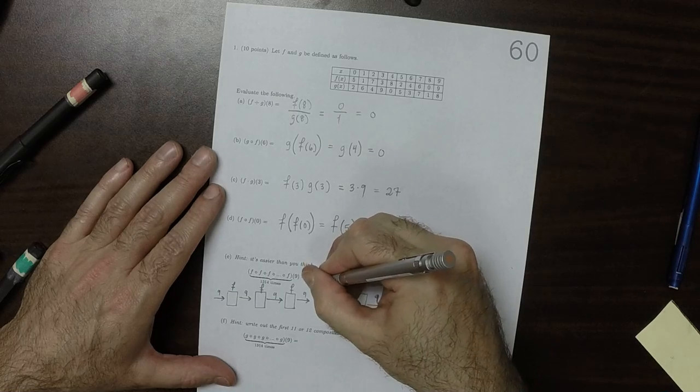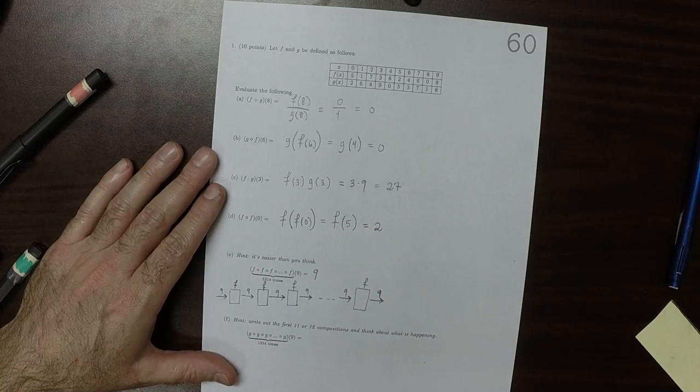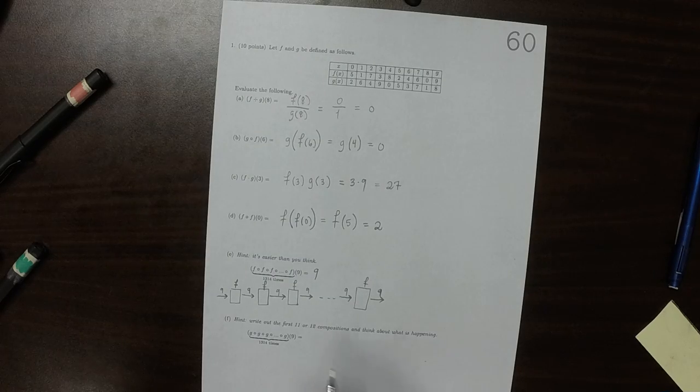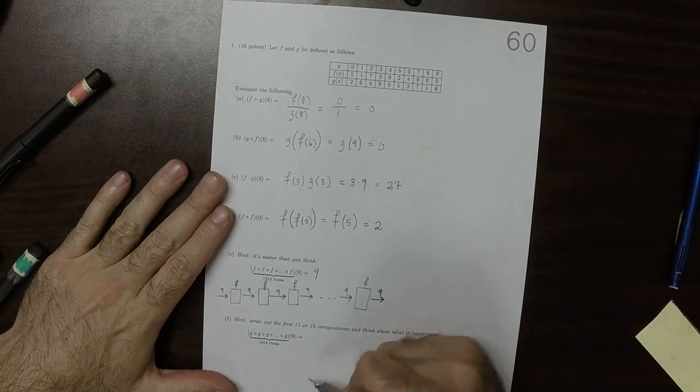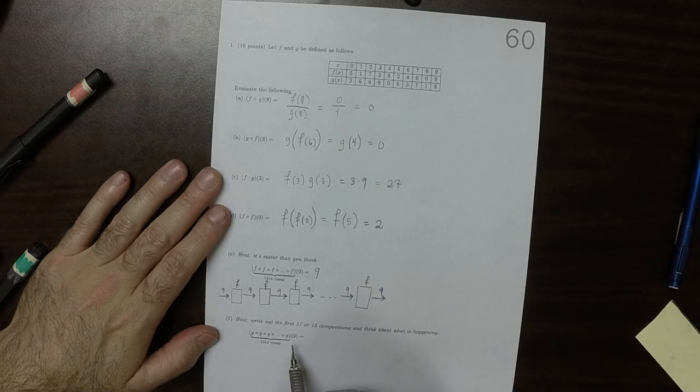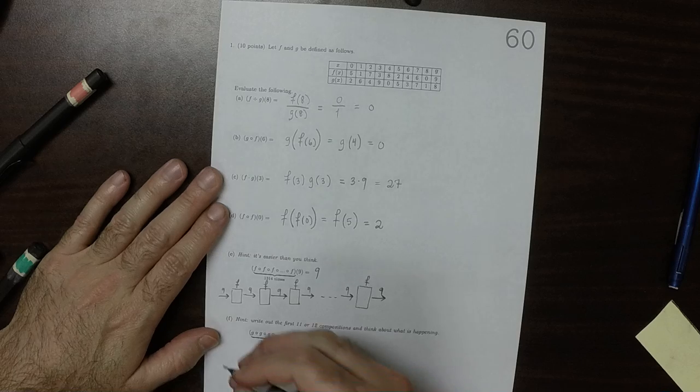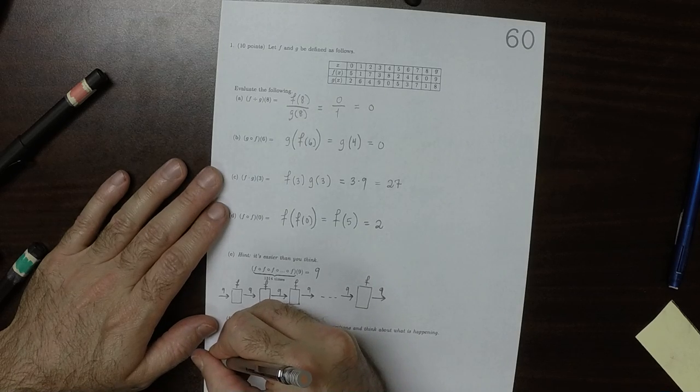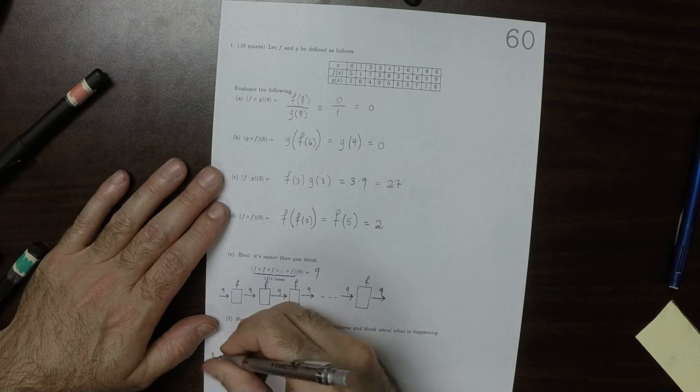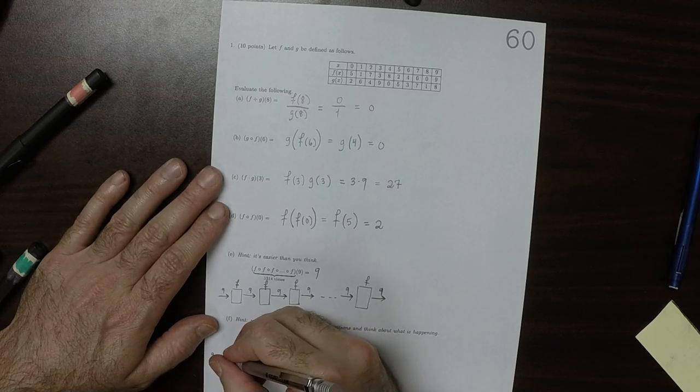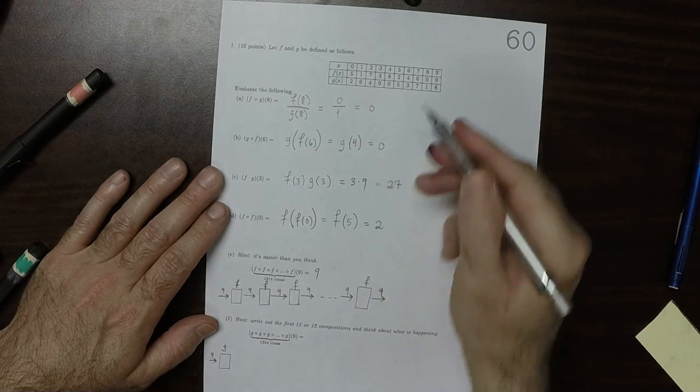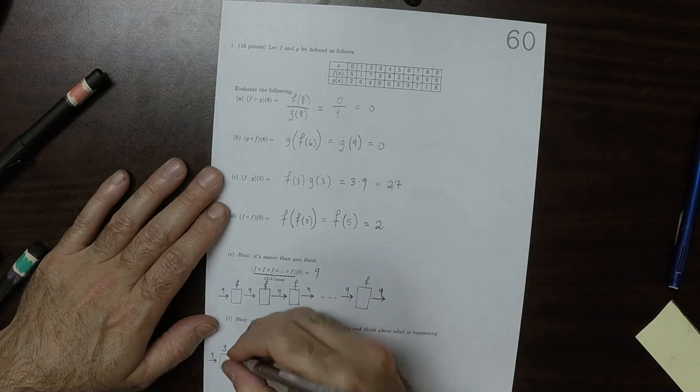So this one is a little more interesting. Now the question is, what if you start repeatedly putting a 9 into a g machine? Okay, so if you put a 9 into the g machine, then out comes an 8.